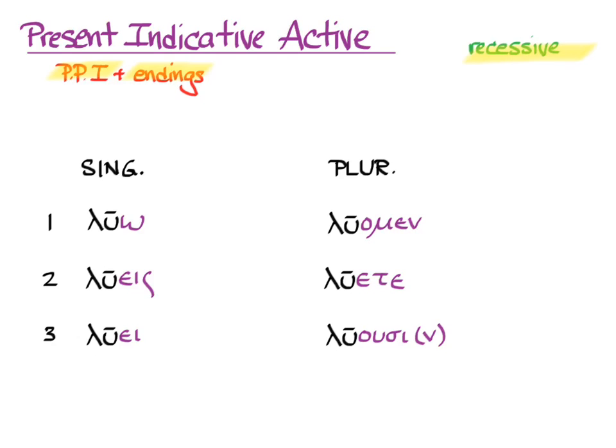Remember your rules for accent and look at the last syllable. In the first person singular, it's long, and so we count one, two, and we put in an acute over the second to last syllable. In the second person singular, λύεις, we see long last syllable. So we count one, two, and we put in an acute over the second to last.